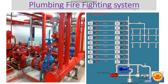Now coming to the plumbing firefighting system — this is the basic view of the firefighting plant, with diesel pumps, jockey pumps, and hydrant pumps. Suppose there is a fire at level 5 of the building: the jockey pump and electric pumps start, and we can extinguish the fire at that floor. Even if the temperature rises above 50 to 60 degrees Celsius, a sprinkler gets triggered and helps to extinguish the surrounding fire.